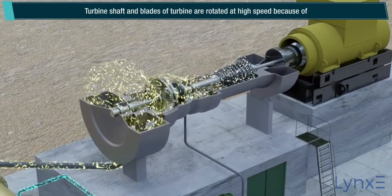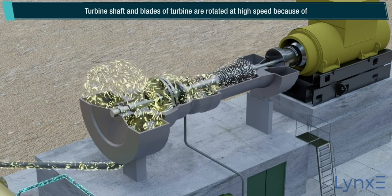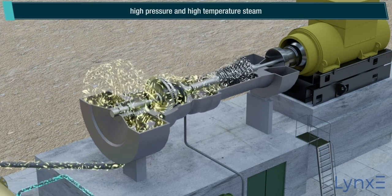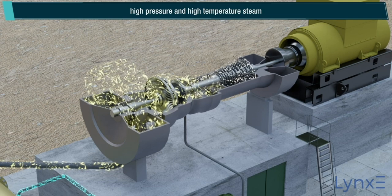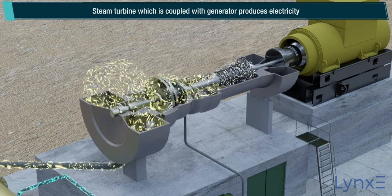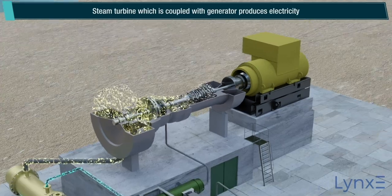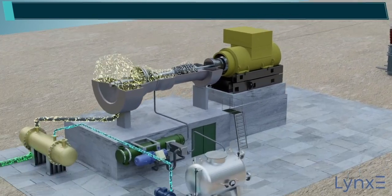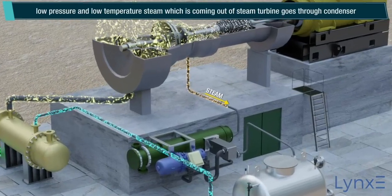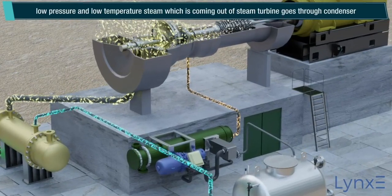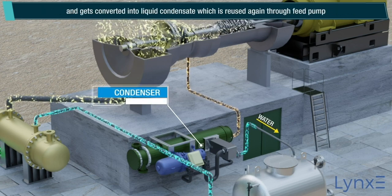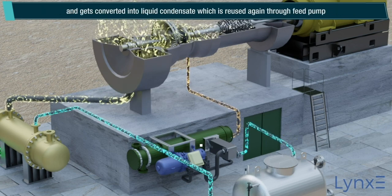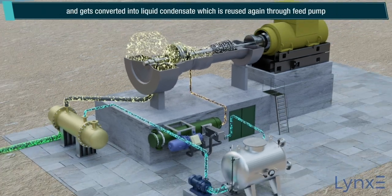The turbine shaft and blades rotate at high speed because of the high pressure and high temperature steam. The steam turbine, which is coupled with a generator, produces electricity. Low pressure and low temperature steam coming out of the steam turbine goes through the condenser and gets converted into liquid condensate, which is reused again through the feed pump.